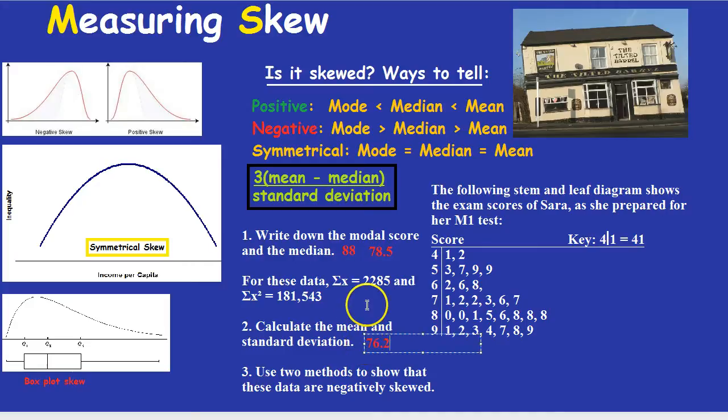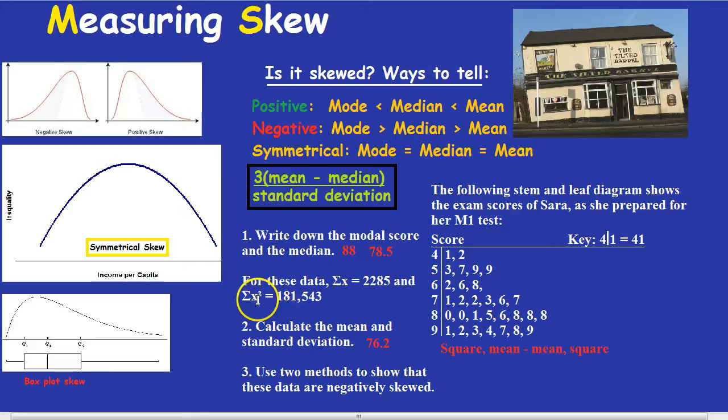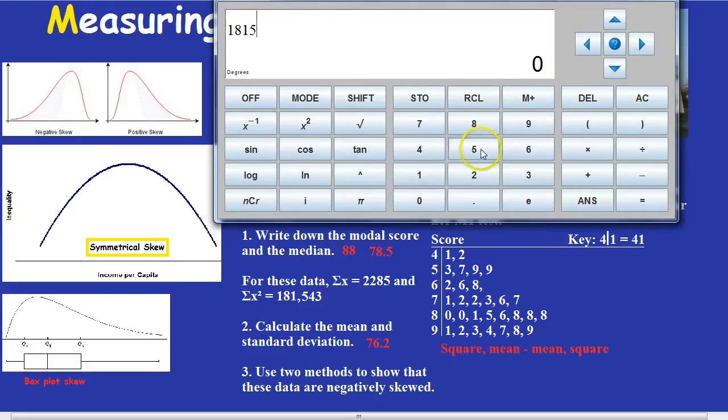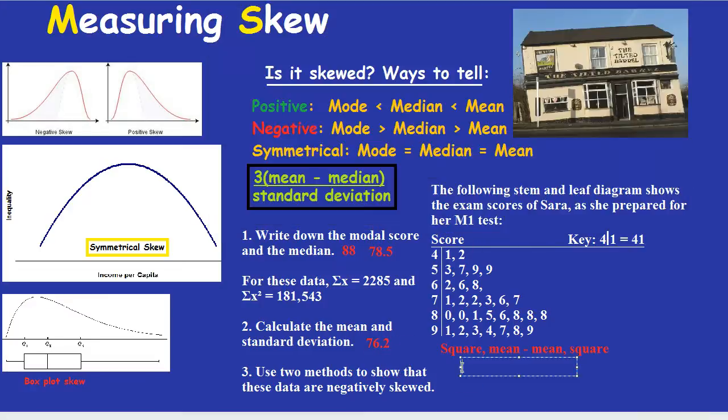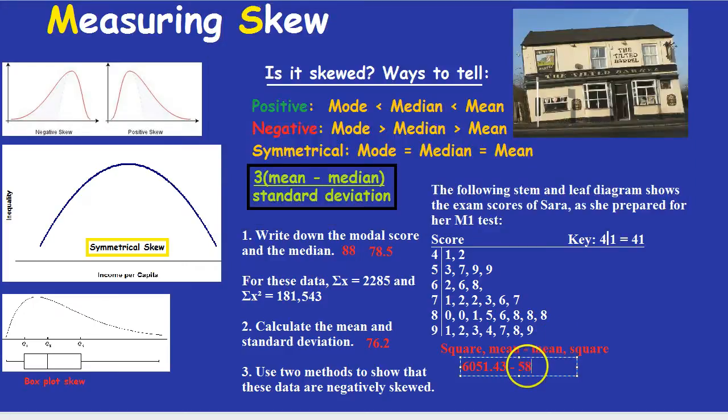And now we can go on to standard deviation. And the formula for that, or the way I remember it, you might remember the formula. I remember square it, mean it, mean it, and square it, or take away, mean it, and square it. And I just imagine someone in my head screaming at me, square it, mean it. You're not meaning it. Square it. Anyway, that's just me. I'm a bit weird. How are we going to do that? Well, they've squared the numbers already, and they've added them up. So that's good. All we need to do now to get the mean of those squared numbers is divide that by 30. So 181,543 divide by 30, and we get 6,051.43. Now we take away the mean squared. The mean we already worked out was 76.2. And that mean squared is 5,806.44.